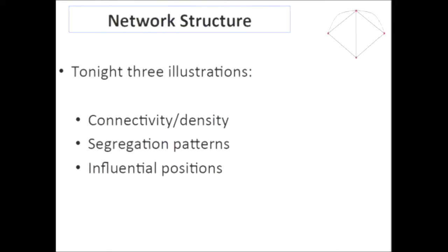Tonight I'll go through three different illustrations of properties that networks have and how each one affects human behavior. The first is connectivity or density — does the network have lots of connections or very few? The second is segregation patterns — does everybody interact fairly evenly, or do we see strong cuts with subgroups only interacting amongst themselves? The third is position in the network — which nodes are well-situated, in more powerful or influential positions, and which are more peripheral.